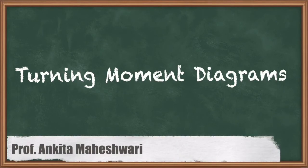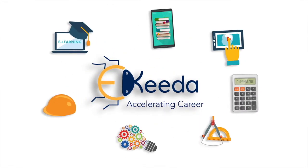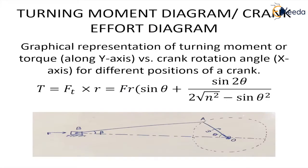Hello everyone. In this video we will discuss turning moment diagrams. We know what the turning moment is from engine force analysis: the turning moment T is the product of the crank effort Ft and the perpendicular distance R, which is the length of the crank. We derived the formula where this crank effort is the net force applied at the crank pin perpendicular to the crank, and this gives the turning moment to the crankshaft.